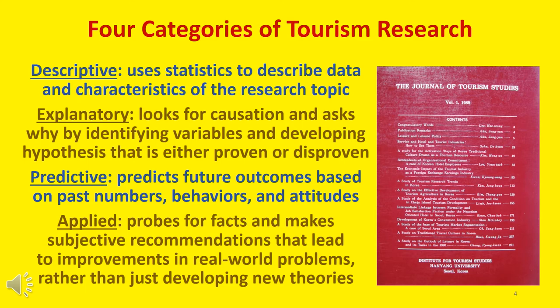Depending on its purpose, research can be categorized as descriptive, explanatory, predictive, or applied. Tourism research uses all four. Descriptive research uses statistics to describe the data and characteristics of the research topic. Explanatory research looks for causation and asks why by identifying variables and developing a hypothesis that is either proven or disproven. Predictive research predicts future outcomes based on past numbers, behaviors, and attitudes. Applied research probes for facts and makes subjective recommendations for improvements in regards to real-world problems, rather than just developing new theories.